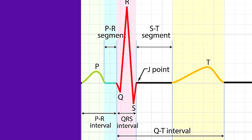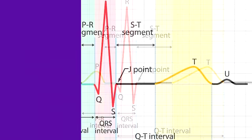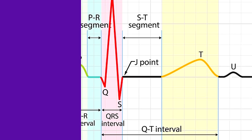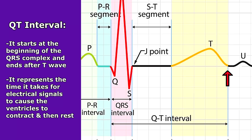After the ST segment, we have the T wave, which represents the beginning of ventricular repolarization - so relaxation. The ventricles are so big that whenever they relax, it creates this T wave. After the T wave, you usually have a flat isoelectric line representing that ventricular repolarization is complete, and then the cycle starts again with a new P wave, QRS complex, and T wave. Sometimes after the T wave you may see a U wave - it's not common in all patients, but may occur in hypokalemia. Lastly, the QT interval starts at the beginning of the QRS complex and ends after the T wave, demonstrating the time it takes for electrical signals to cause the ventricles to contract and then rest.